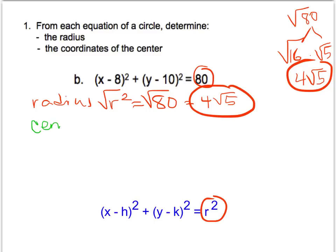And then to find the center again, we're just going to take the opposite signs of the x and y values in the equation. Negative 8 becomes positive 8, negative 10 becomes positive 10.